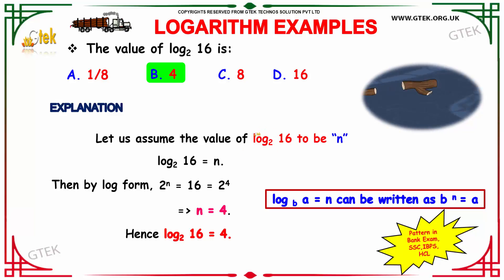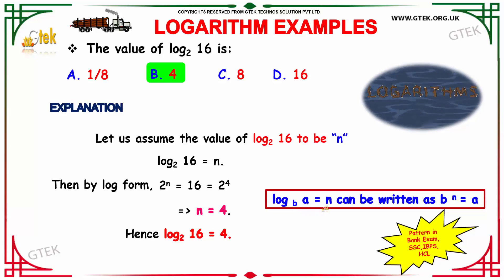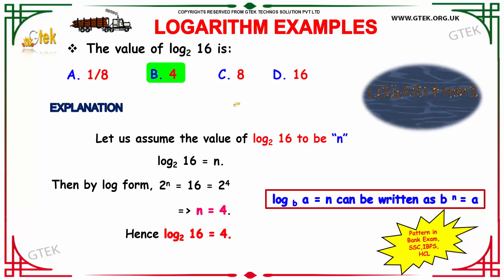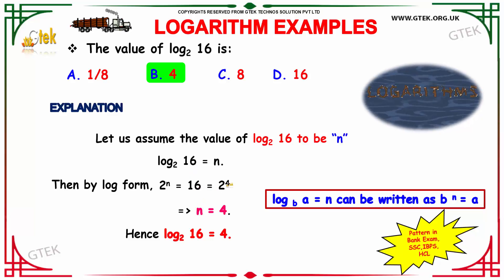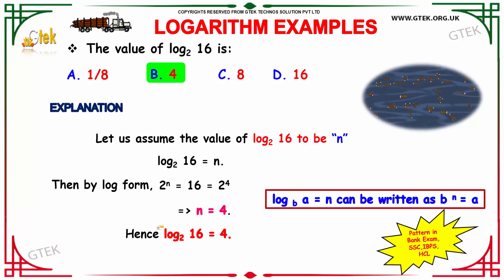Let us assume the value of log 16 to the base 2 to be n. As per the logarithmic form, b to the power n equals a — that is, 2 to the power n equals 16, which is nothing but 2 to the power 4. Hence, your n value will be 4, meaning log 16 to the base 2 equals 4, which is option B.